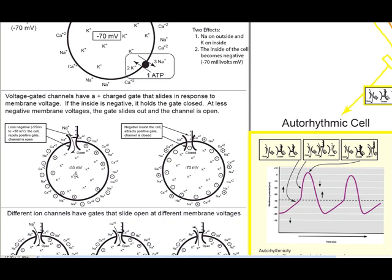Contrast this with minus 55 millivolts — the case of a sodium channel where it just takes a small change in voltage. That small change makes the positive charges not nearly as attracted to the inside anymore, so the positive region slides out, the gate slides open, and now the channel is open.